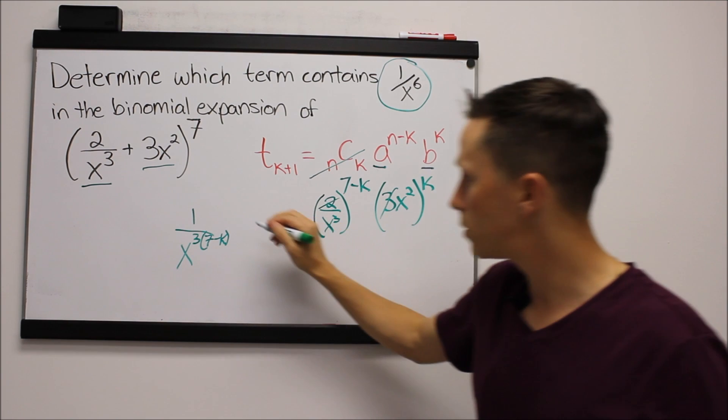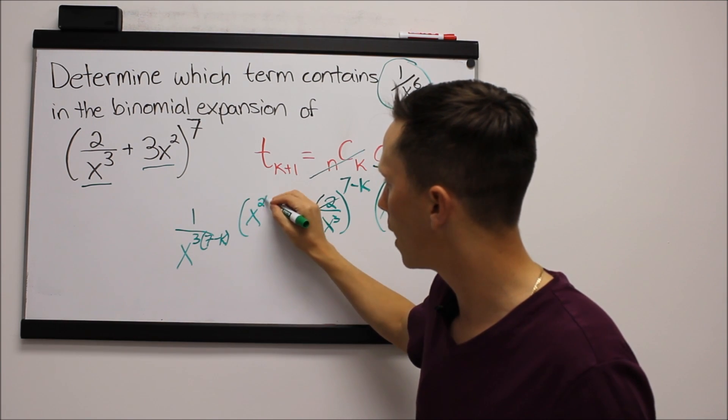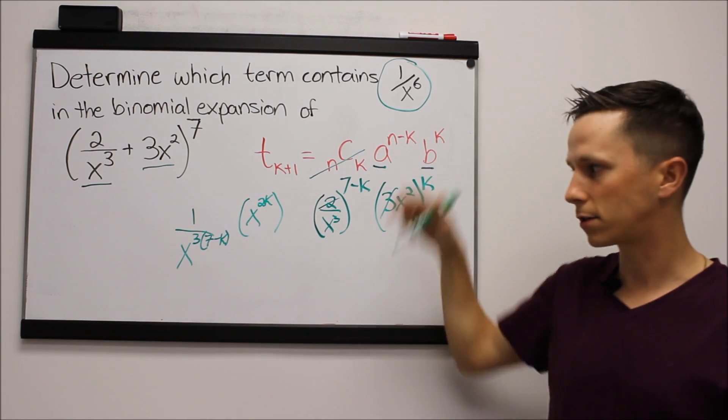We're going to have x squared times 2 times k, so that'll be x to the 2k, and that's on top, right? 3x squared is above.